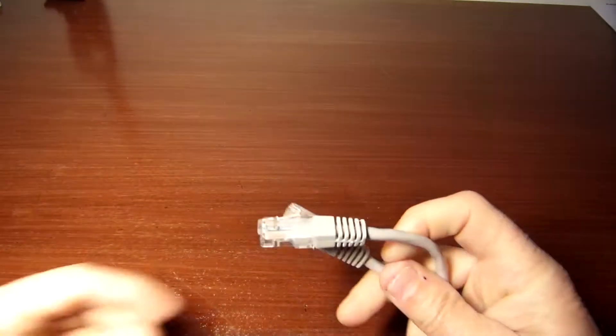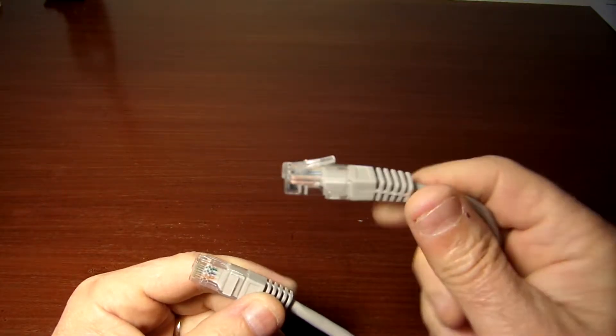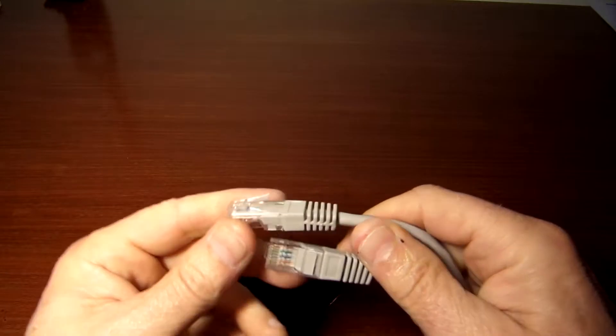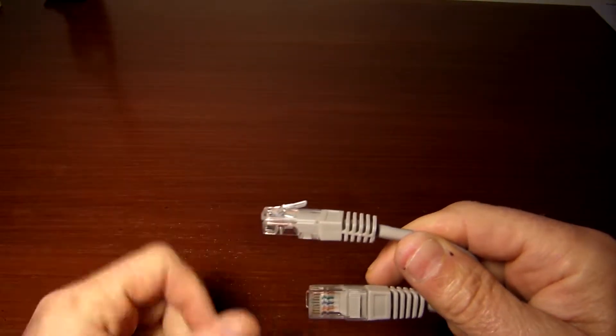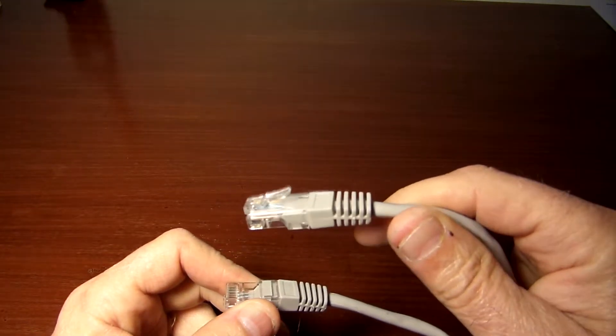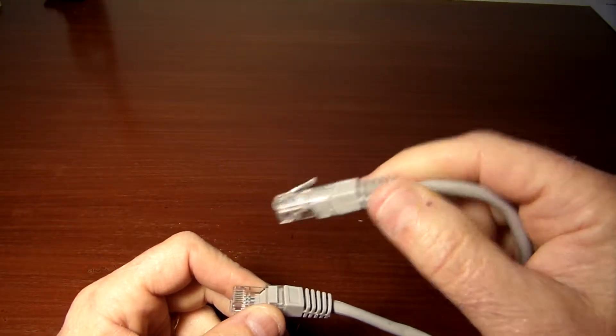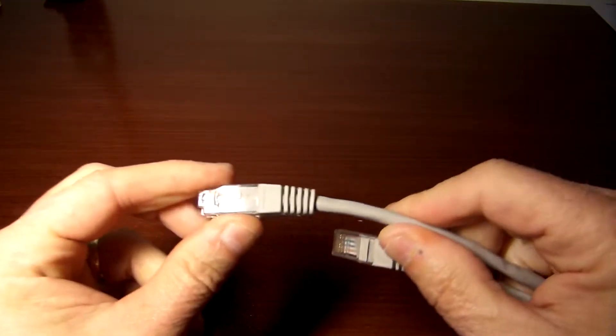So you may ask yourself, why do I need to be able to make my own Cat5e cables? Well, if one of these cable ends get damaged, which sometimes they do, these retaining clips break off and you have to replace one of these ends, you need to know how to properly wire it.